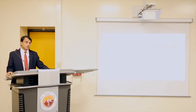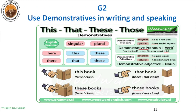Our next objective is that students should be able to use demonstratives in writing and in speaking. In the English language, there are four demonstratives: this, that, these, and those. This is used for something singular which is near to you, and that is used for something singular which is far away from you. For something plural, we use these for things which are near, and those for things which are away from us. For example: something in front of me — this is a book. Something at a distance — that book.